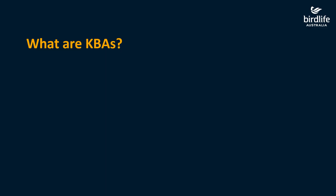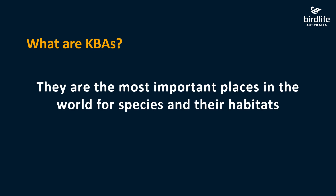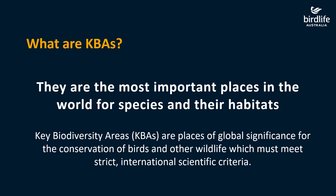Let's go through what are key biodiversity areas. We can break that down to KBAs — that's the acronym I'll be using in this tutorial. The KBAs, or Key Biodiversity Areas, are the most important places in the world for species in their habitats. KBAs are nature's hotspots. They are places of global significance for the conservation of birds and other wildlife, which must meet strict international scientific criteria set by the IUCN, the International Union for the Conservation of Nature.